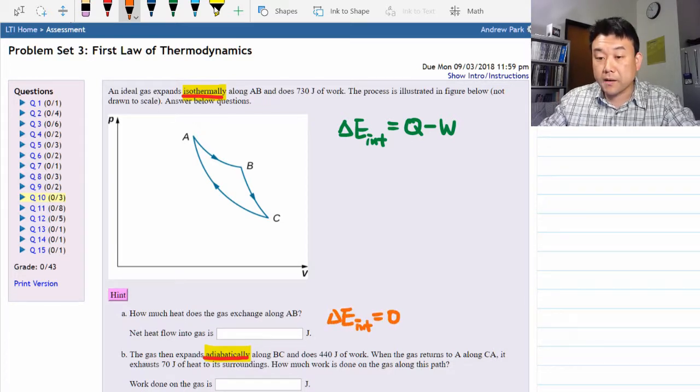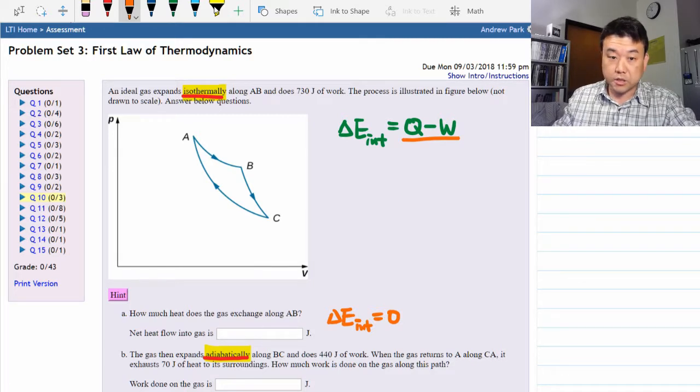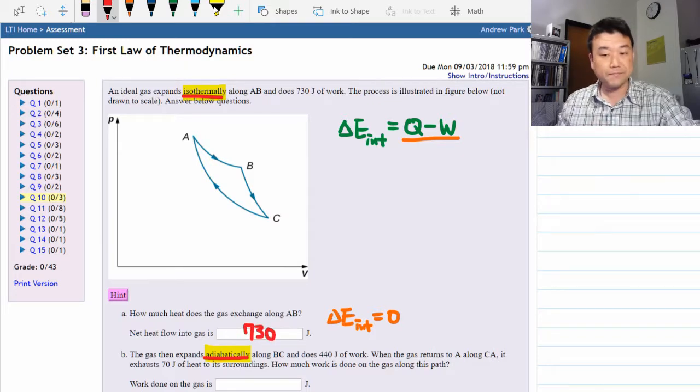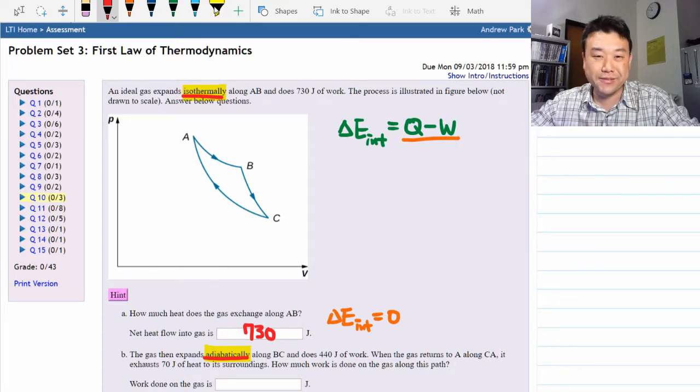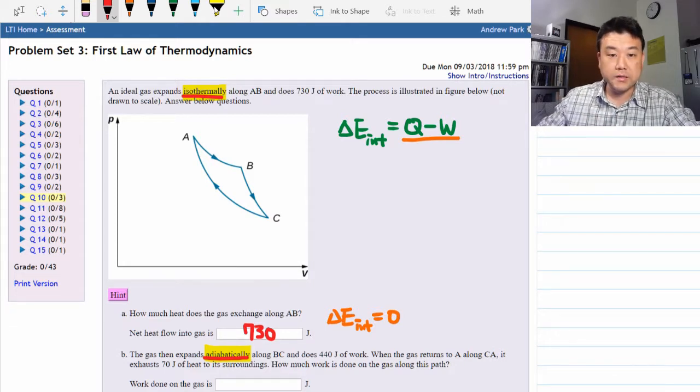Looking back at the first law of thermodynamics, Q must equal W since the change in internal energy is zero. Net heat flow into the gas must equal the amount of work being done, 730 joules. That's it. If it seems too simple, that's why you should read the question very carefully. This is actually a very simple question. Let's move on to the second part.